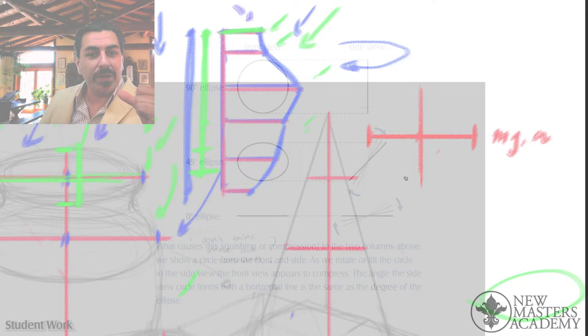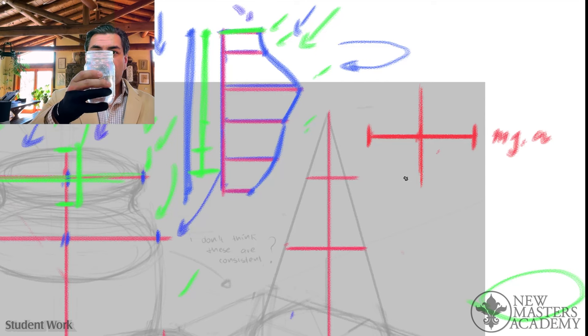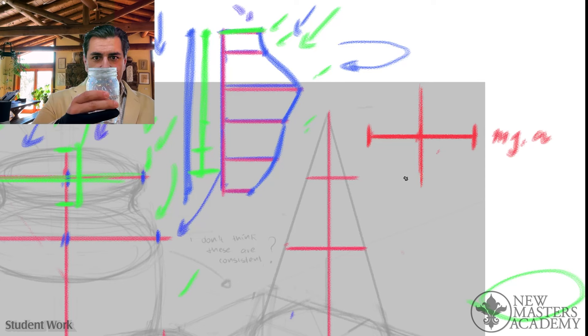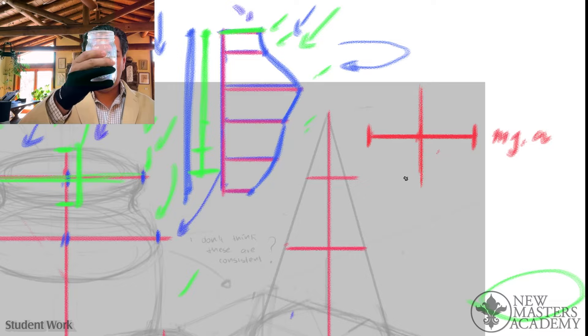So you have a top of a cup, right? Put it right in front of your eyes until it looks like a flat line. Now drop it, but don't move your eyes. Just drop it. Do you see how it starts to open up and become more like a circle? Now raise it the other way. And if it's clear, you can look through the bottom. Do you see how the same thing happens?